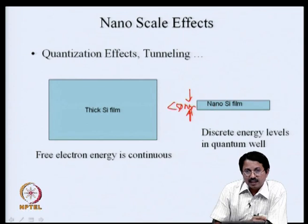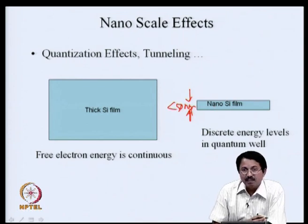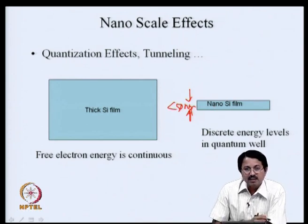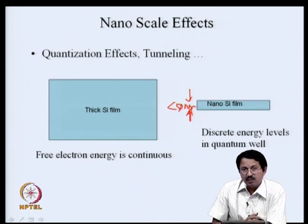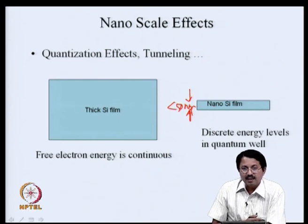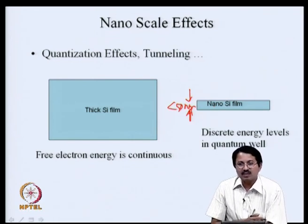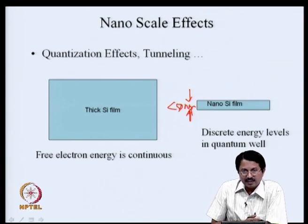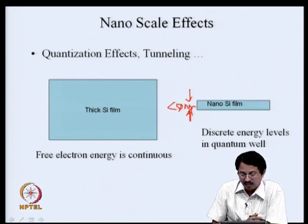The physics changes at the nanoscale — for example, the band gap is no longer the same as in a thick silicon film. If the band gap changes, all semiconducting properties change, such as carrier concentration. We also cannot get rid of quantum effects; the size effect is essentially coming from quantization. But we can exploit those effects and intelligently design the transistors so that we can scale the technology further.